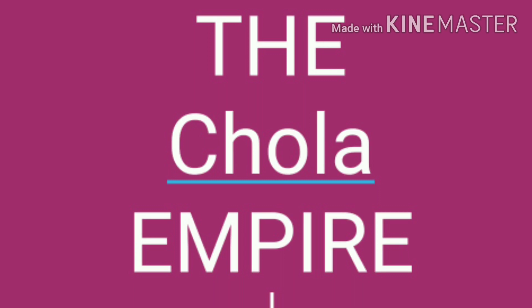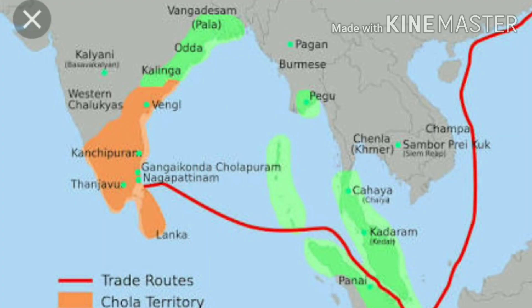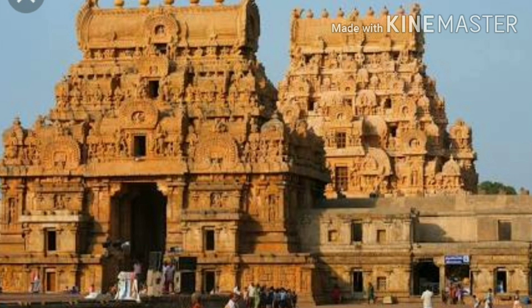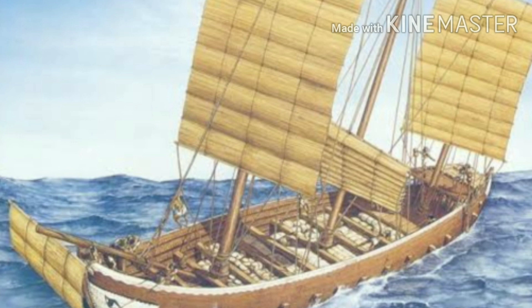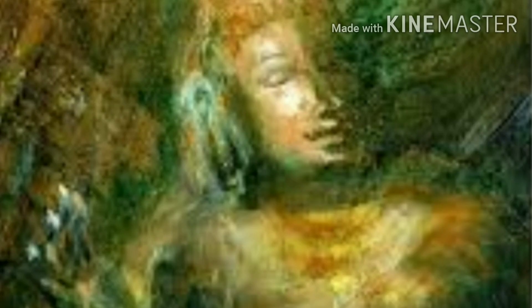Chola Empire: One of the most prominent empires in south India, the Cholas ruled from Tamil Nadu and extended to southeast Asian nations. Unlike most other rulers, the Cholas were not from outside but from south India, and they contributed greatly to the political, architectural, and cultural spheres of India. The Cholas had a strong army and a powerful navy. During this period, Buddhism and Jainism flourished to a great extent, and fine arts, metal casting, and literature reached new heights.